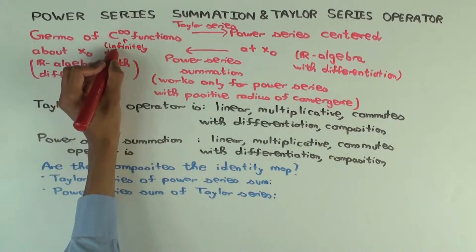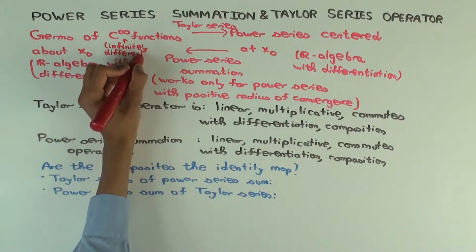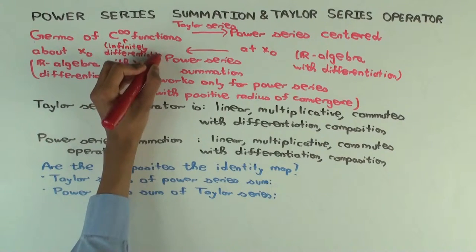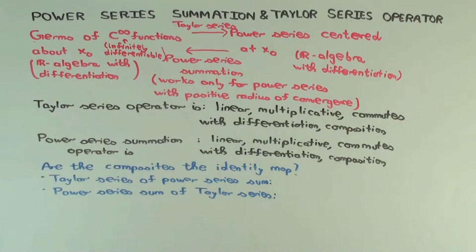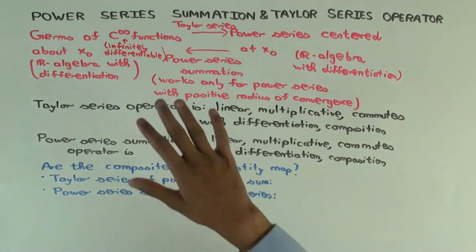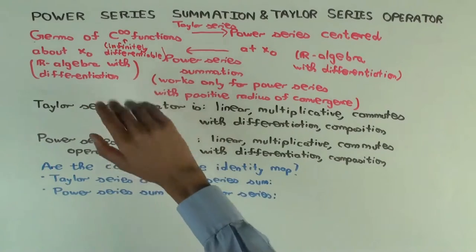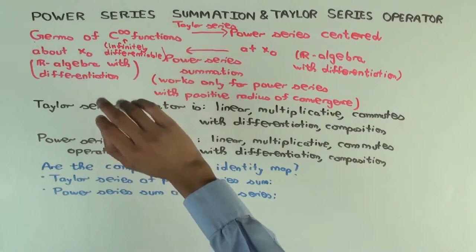So there is a lot of structure here: an additive and scalar multiplication structure (that's a vector space structure), a multiplicative structure, and a differential structure. Even if you don't understand the terminology, you just have these functions locally and you can add, subtract, scalar multiply, multiply, and differentiate.